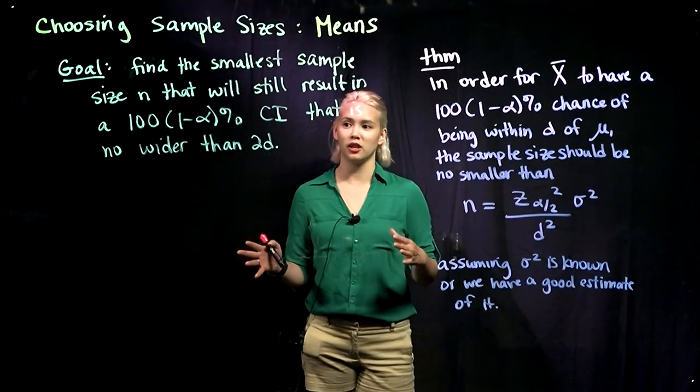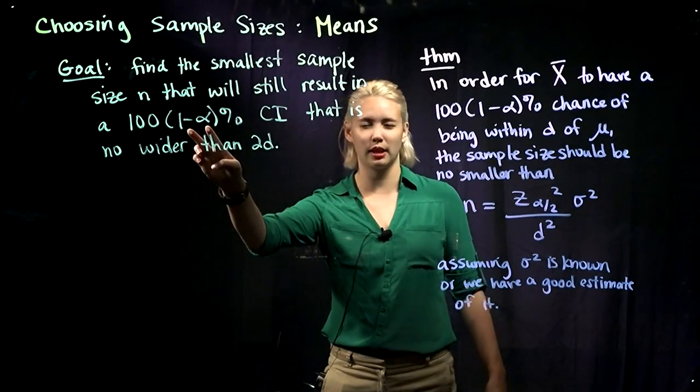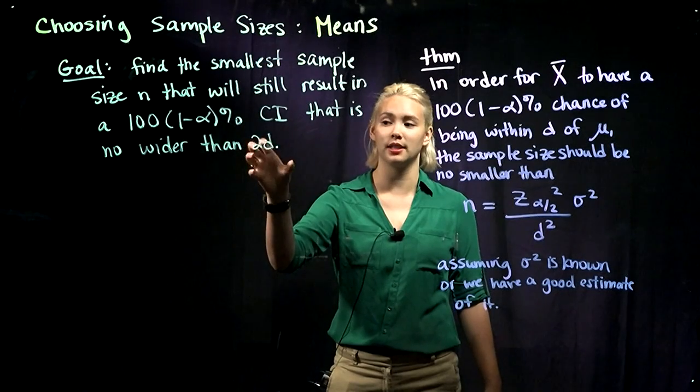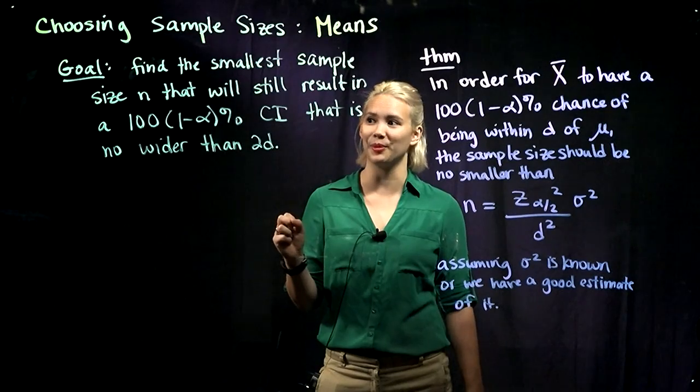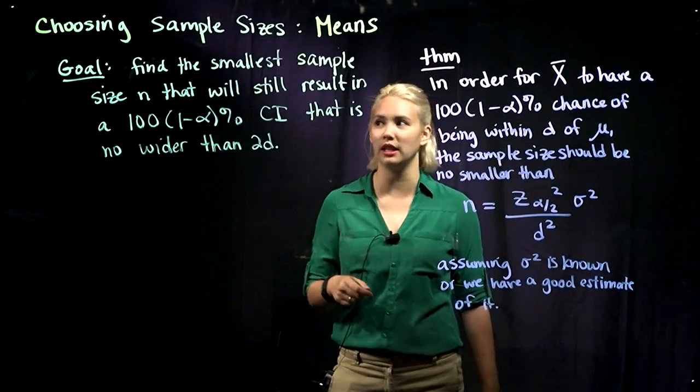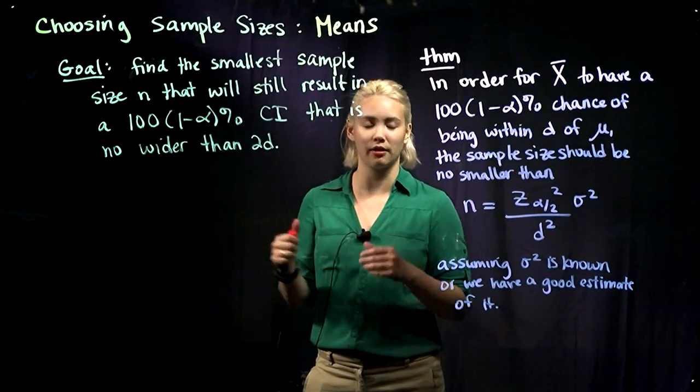In our case here we have restrictions that we have some specified level of confidence that we're trying to work with, and we also have a distance that we want to be from the sample mean. Here we want to have a confidence interval that's no wider than 2d. We're trying to find the smallest sample size n so that we can still have this work.